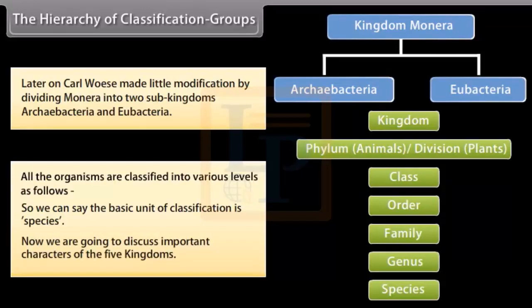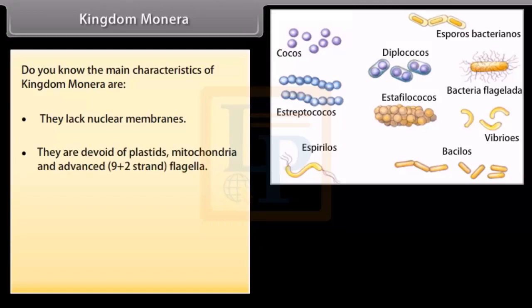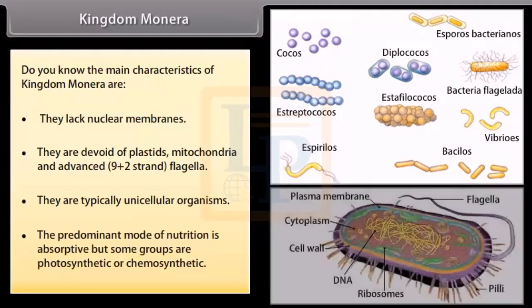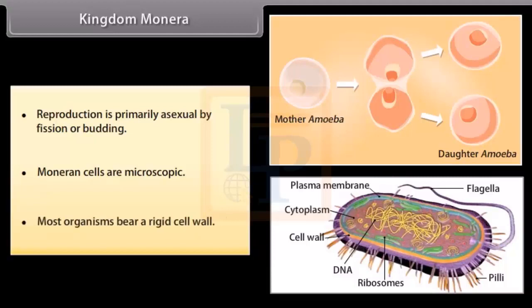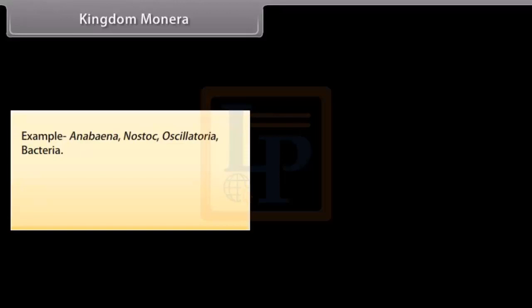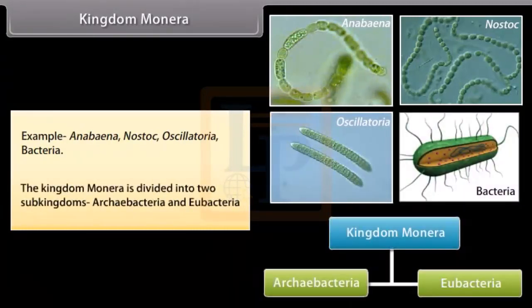Kingdom Monera: the main characteristics are that they lack nuclear membranes and are devoid of plastids, mitochondria, and advanced 9+2 strand flagella. They are typically unicellular organisms. The predominant mode of nutrition is absorptive, but some groups are photosynthetic or chemosynthetic. Reproduction is primarily asexual by fission or budding. Most organisms bear a rigid cell wall. Examples include Anabaena, Nostoc, Oscillatoria, and Bacteria. Kingdom Monera is divided into two sub-kingdoms: Archebacteria and Eubacteria.